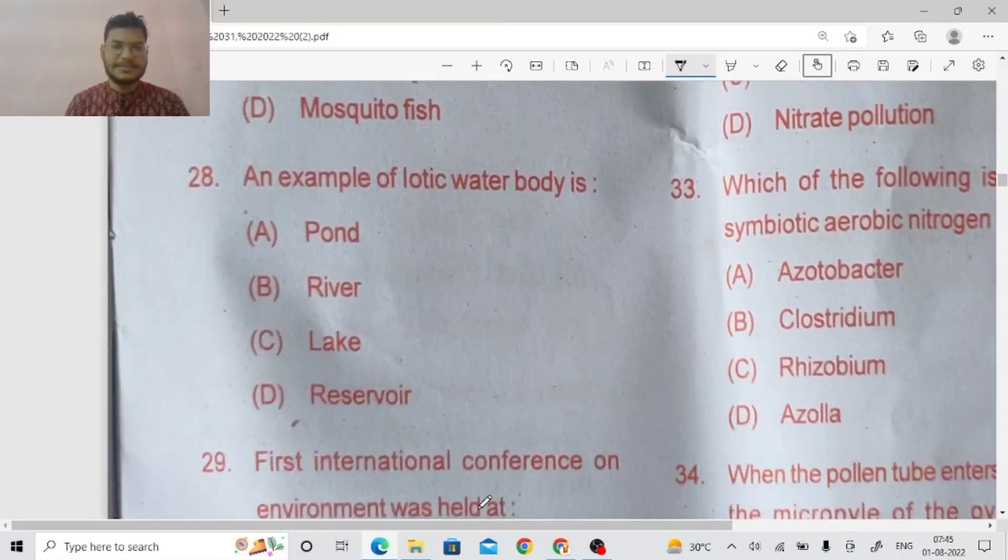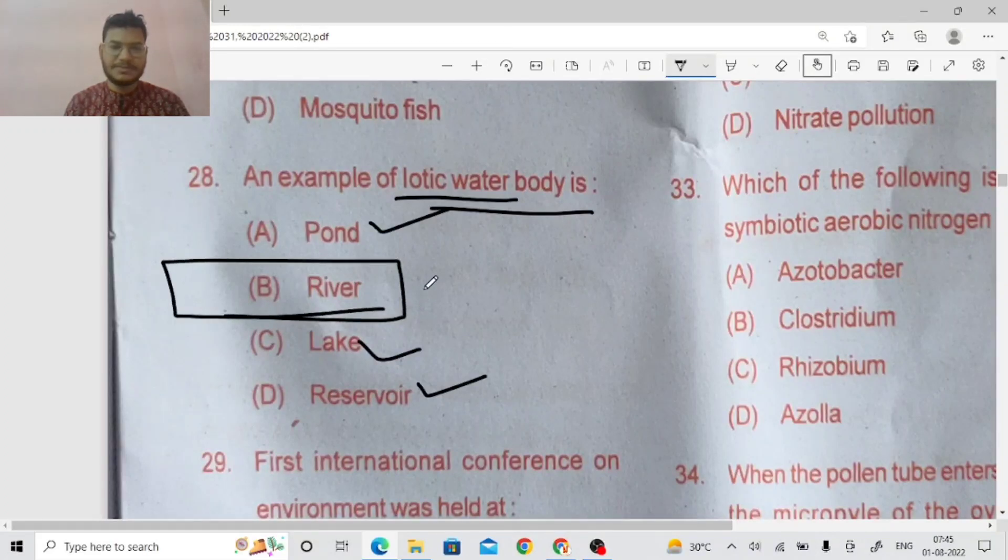Question number 28. Example of lotic water body. If all are of the same type, pond, lake and reservoir are stagnant water, flowing water, river. So river is the right answer.